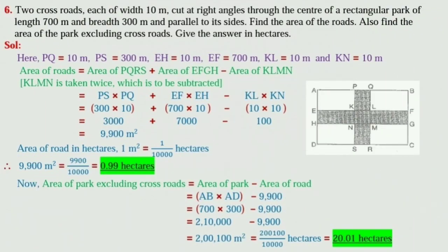Sum number 6. Two crossroads each of width 10 meter cut at right angle through the center of a rectangular park of length 700 meter and breadth 300 meter and parallel to its side. Find the area of the roads. Also, find the area of the park excluding crossroads. Give the answer in hectares. Student, please see the diagram first.